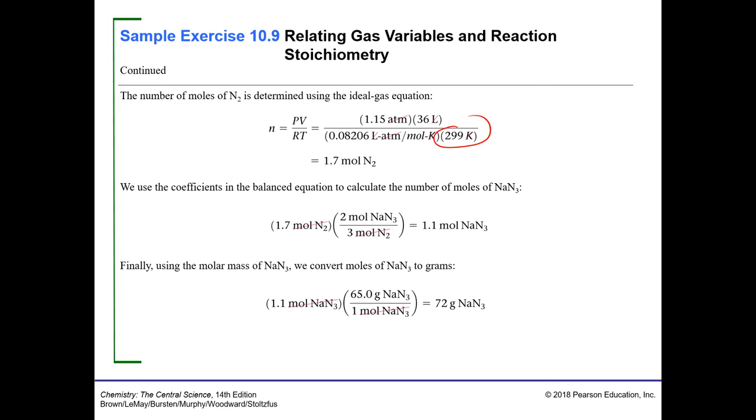Okay. So then going across the stoichiometry, there's two moles of NaN3 in that balanced equation for every three moles of nitrogen gas generated. Gives us a need for 1.1 moles of sodium azide. And then we take the molar mass of sodium azide times that. And this is what we actually need in our device to fill up a 36-liter airbag.